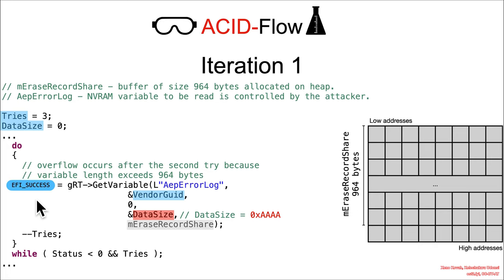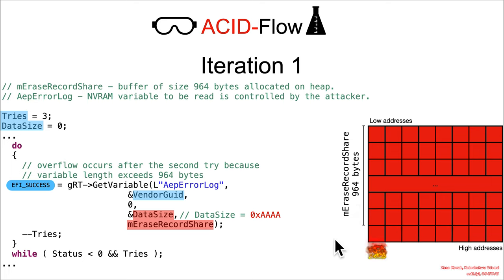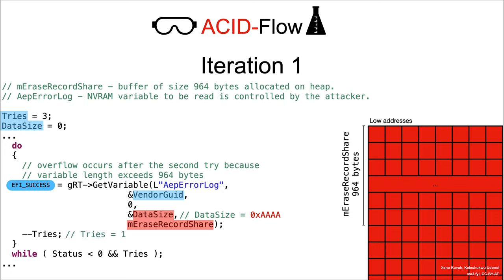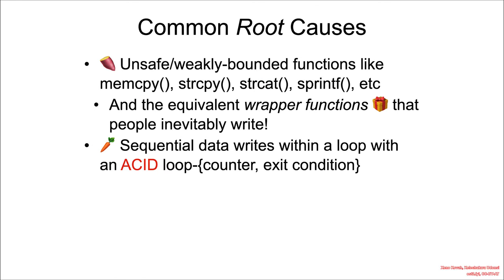The function returns success and happily copies 0xAAAA bytes worth of data into this 964 byte area, consequently overflowing the heap. Tries is decremented and status is success, so it exits the loop after having completely smashed the heap.